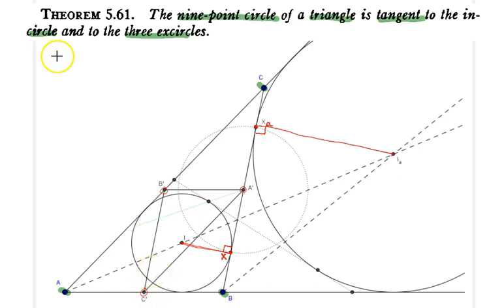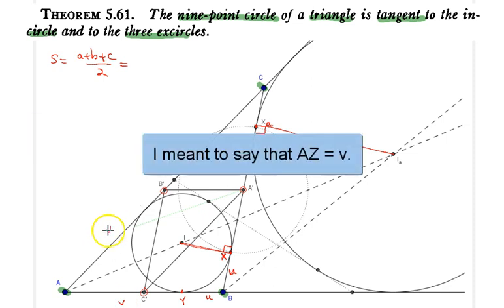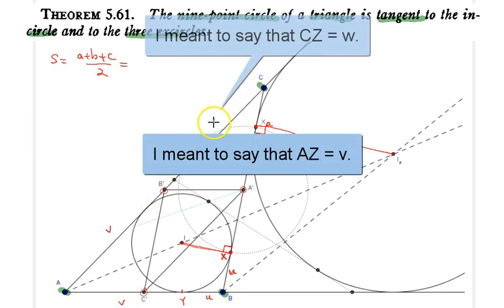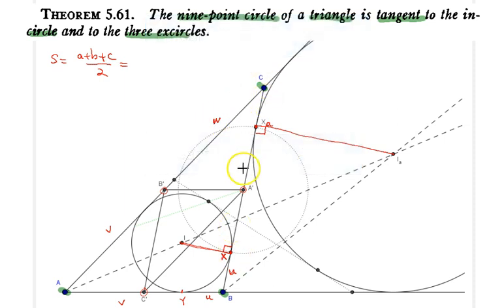So let's start by first writing the semi-perimeter as A plus B plus C over 2. And it's also possible to represent it assuming that we can follow up with these tangencies here. So I have line segment BY if I call it U, BX is also U, AY if I call it V, then AB prime is also V. And finally CB prime is W and CX is also W.